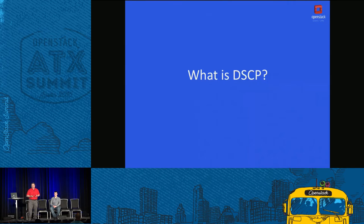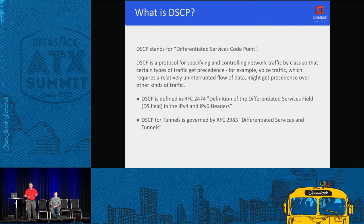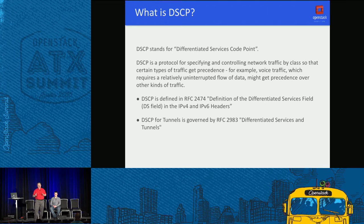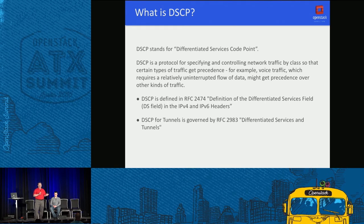What is DSCP? DSCP is a mouthful of an acronym - it stands for Differentiated Services Code Point, which doesn't really tell you much. But DSCP is a protocol for controlling and categorizing network traffic, intended to make sure that certain kinds of traffic get precedence over others. The primary use of DSCP is to ensure that when you have too much traffic and some needs to be dropped, the traffic you want dropped is dropped and the traffic that's really important isn't.